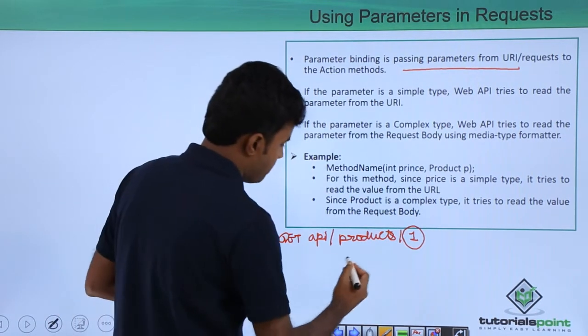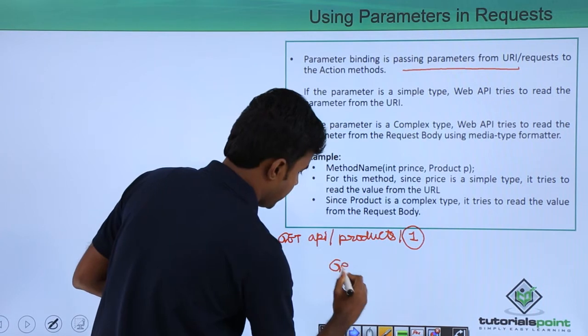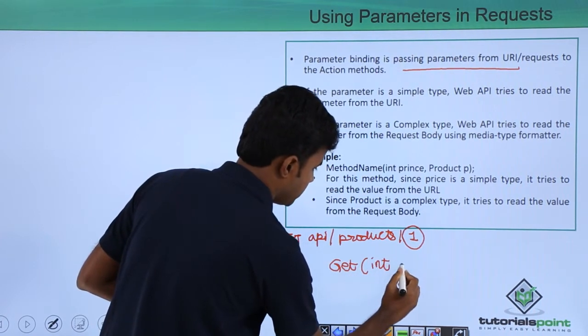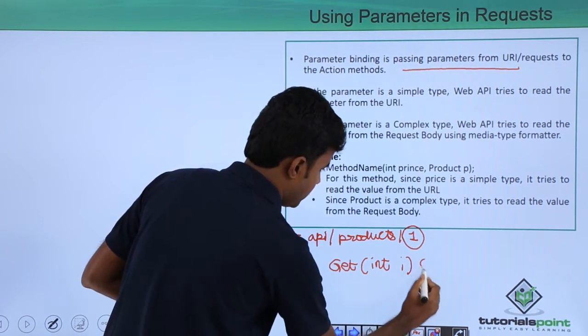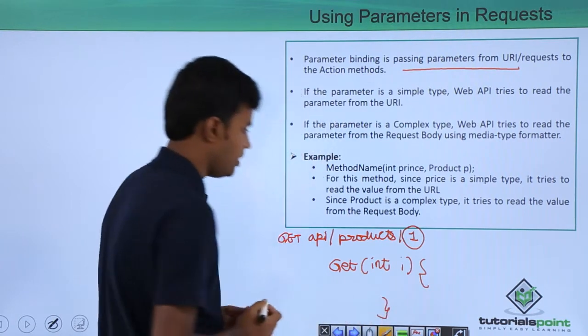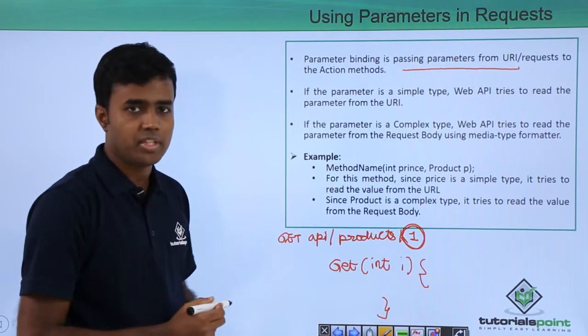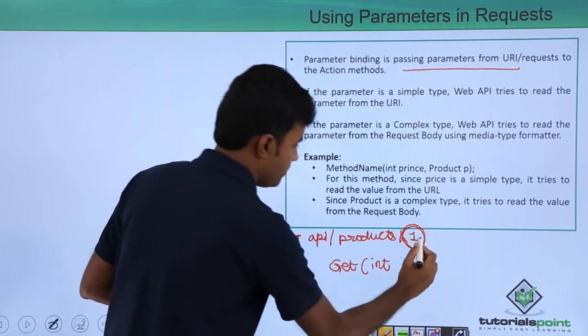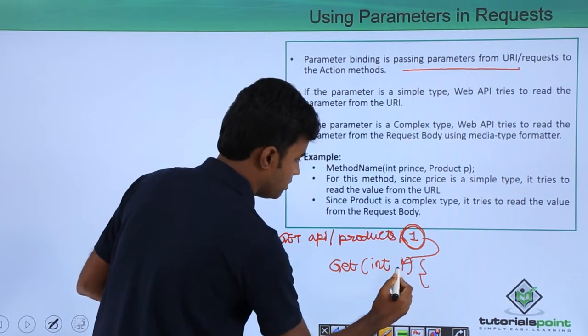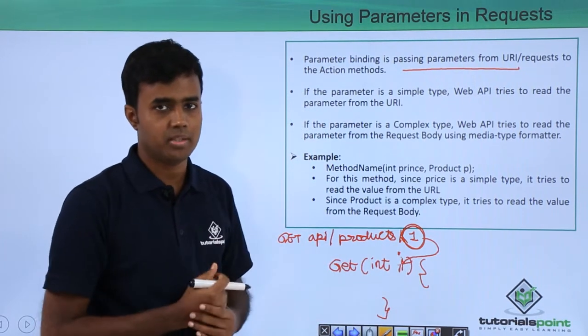Our method will be something like get integer i and the method will start. This parameter which is there within the URL has to be binded to the integer i or the parameter of the method.